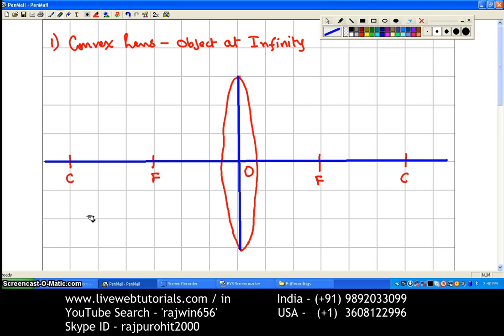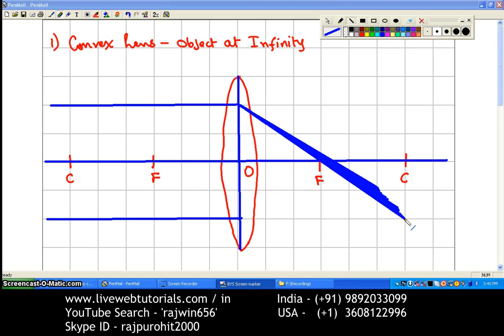Now since these rays are coming from infinity, these rays are going to be parallel. So I am just showing the first ray that is parallel to the principal axis, and then the second ray that is parallel to the principal axis. Now both of these rays, since they are parallel to the principal axis, after refraction, that is passing through the lens, they are going to pass through the focus. This is the second ray that is passing through the focus.